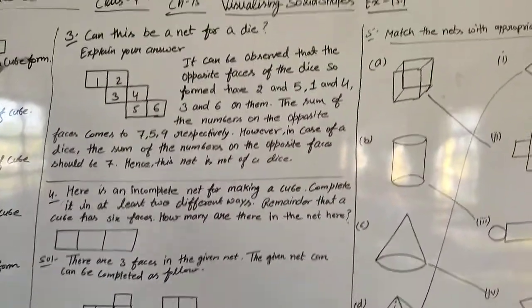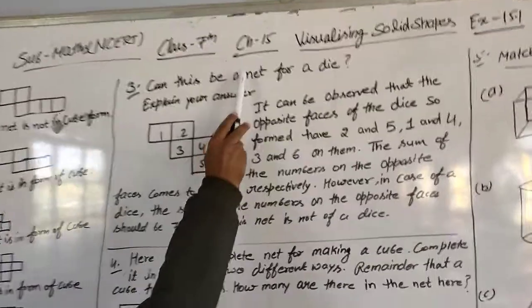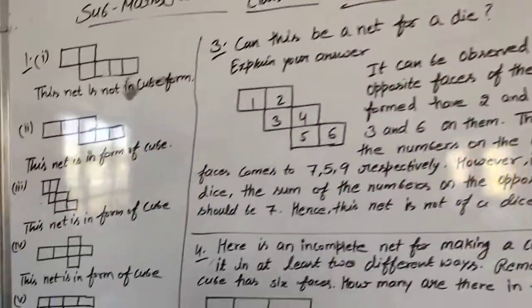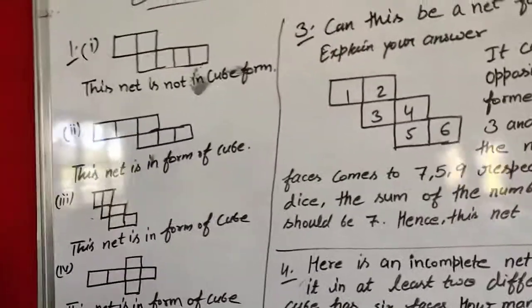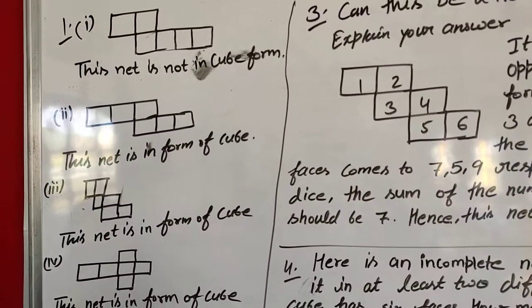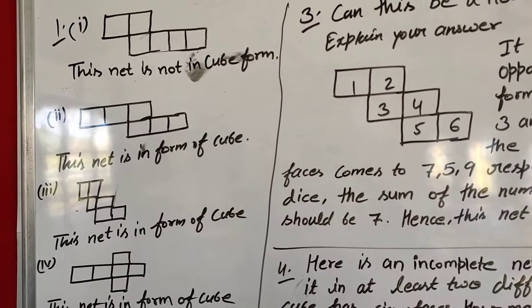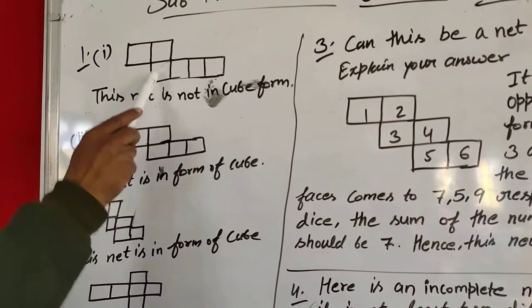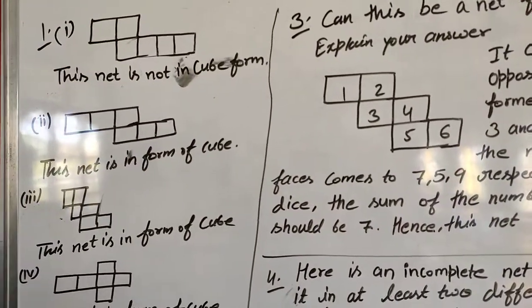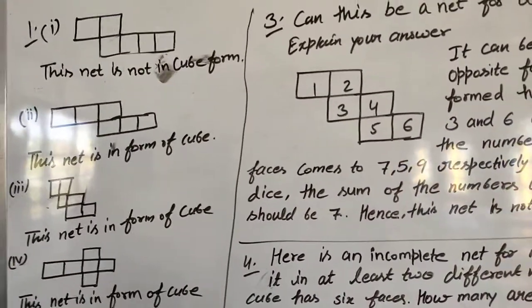Good morning class 7 students. Chapter 15, Visualizing Solid Shapes, Exercise 15.1. The first question is: Identify the net which can be used to make a cube. Cut out copies of the net and try it. So students, these are the given nets. We have to find which is in cube form and which is not.